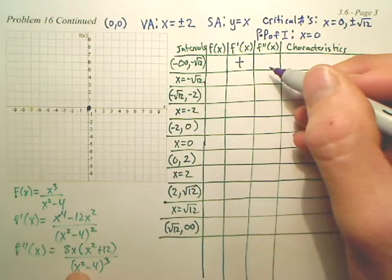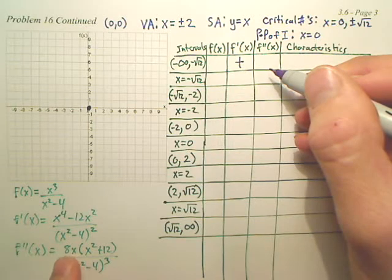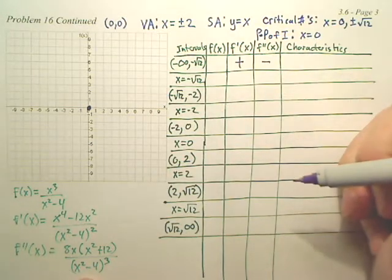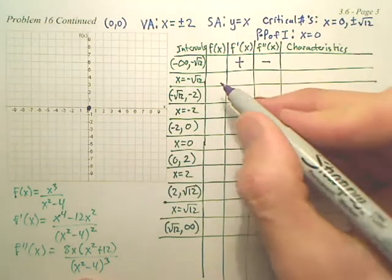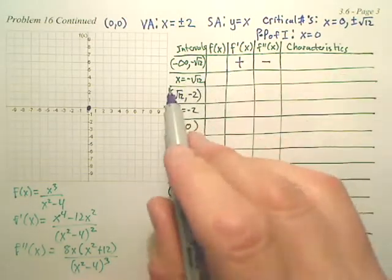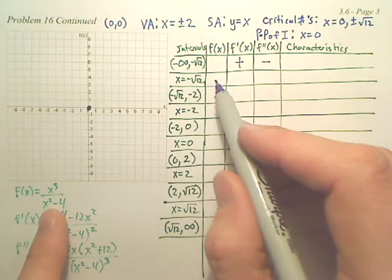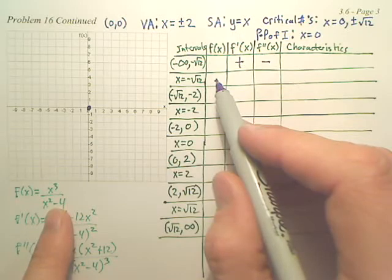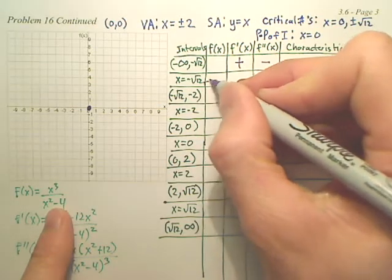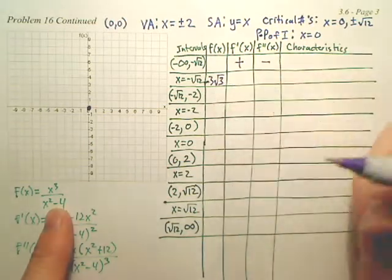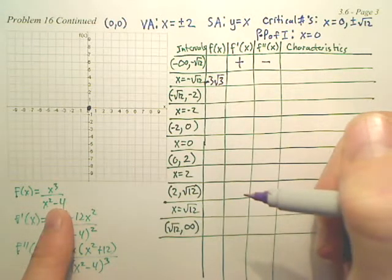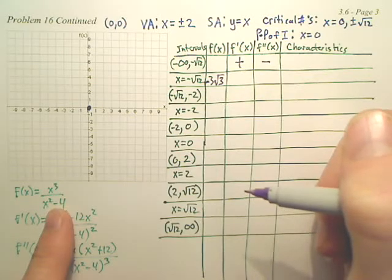When I plug it into the second derivative, right here, negative 4, that's going to be negative. This will become a positive. And then, the bottom, won't that be positive? So, you have a negative times a positive over a positive. Isn't that going to be negative? When we plug in the square root negative 12, right here, we're plugging it in the original. Yes, that's going to be fun to do. Let me just tell you the answer. Negative 3 square root 3. Or, negative square root 27.